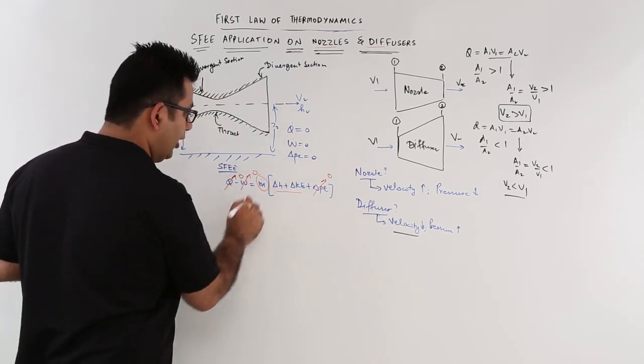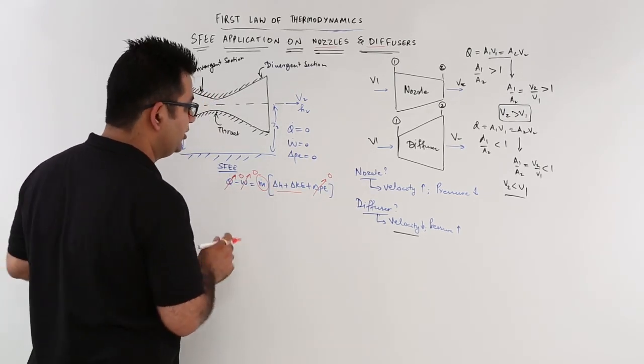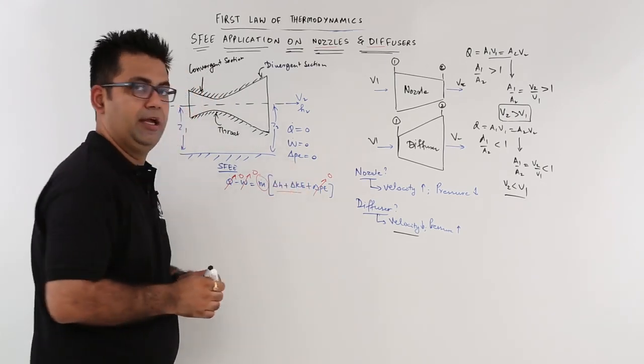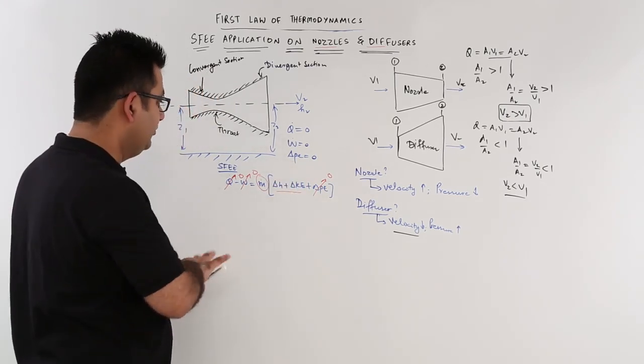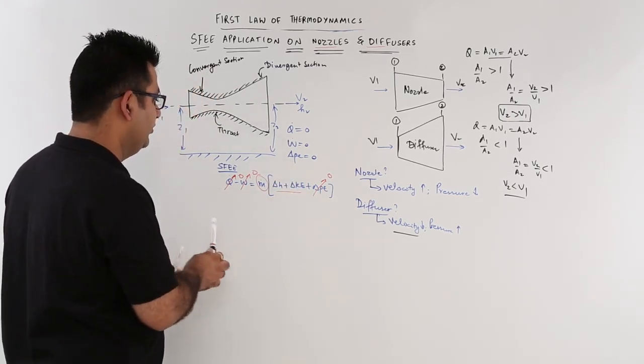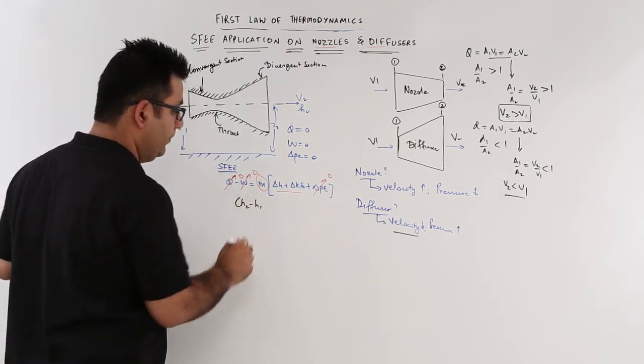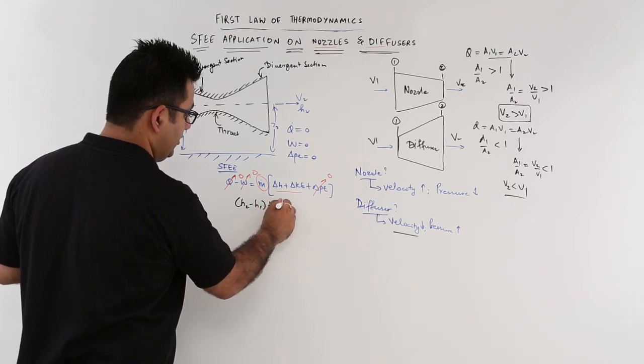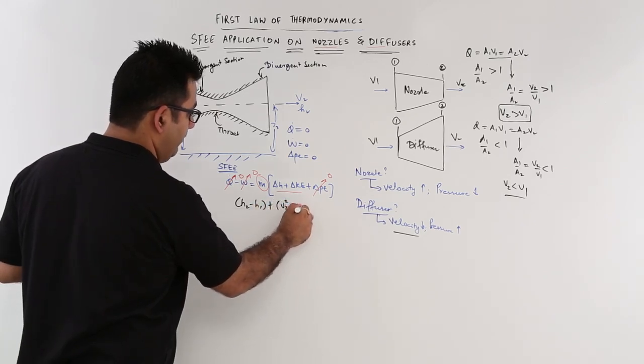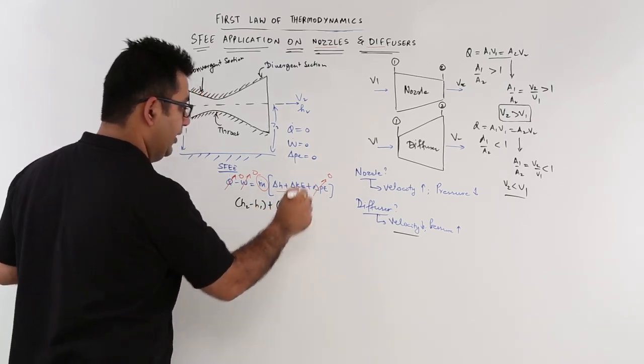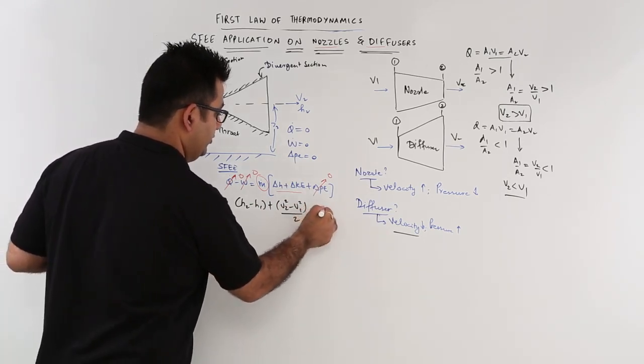Now, ṁ cannot be zero. The only two things which are non-zero are h and ke. So you will have h2 minus h1 plus (v2² minus v1²)/2 equal to zero.